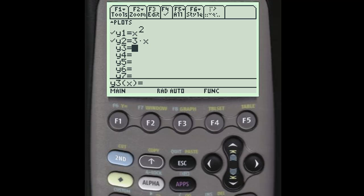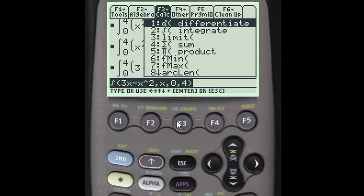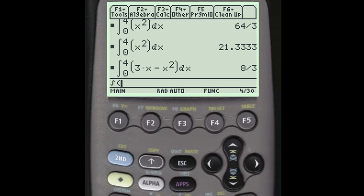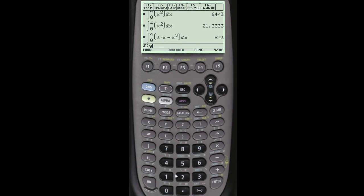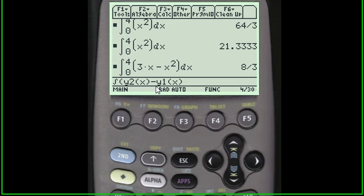So when I go back home I'm going to go F3 integrate, and I can simply just type in y2, which is where my 3x function was, and then x in parentheses next to it, minus y1 open parenthesis x close parenthesis. Okay, and this represents 3x minus x squared because I put those values in for y2 and y1.